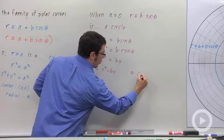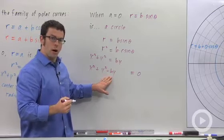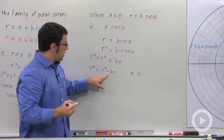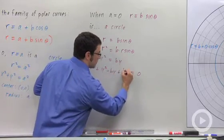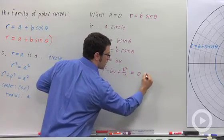If you want to find out what the circle is, you can complete the square on y. Remember to do that you take half of this number, negative b over 2, and square it. So you add b squared over 4 to both sides.